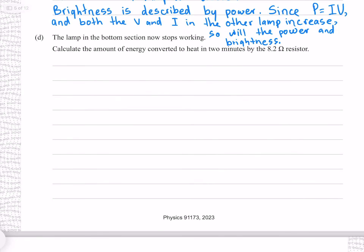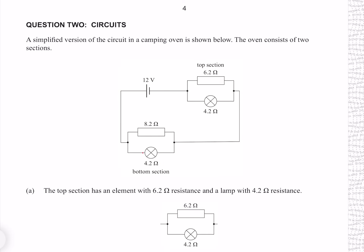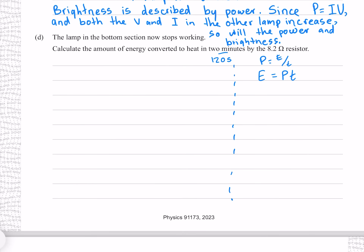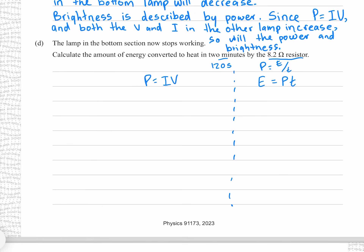The lamp in the bottom section now stops working. Calculate the amount of energy converted to heat in 2 minutes by the 8.2 ohm resistor. We know that power is energy per time; rearranging for energy by multiplying both sides by T. The time is 2 minutes or 120 seconds, but we don't yet know the power. If the bottom lamp stops working, we can assume no current is flowing through it and all the current is now flowing through the 8.2 ohm resistor.